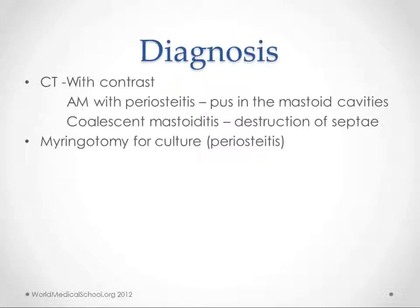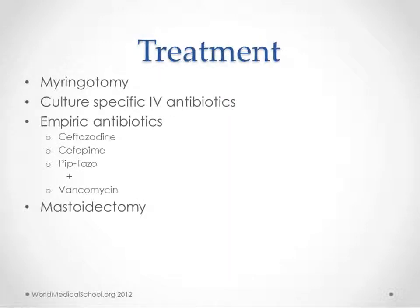In either case, you can do a myringotomy for culture, which will help identify what antibiotics to use. If we haven't obtained a specimen to determine bacterial sensitivity, then we use as broad a spectrum as we can — ceftazidime, cefepime, or piperacillin-tazobactam, which all cover Pseudomonas, since Pseudomonas is on our list of causative agents. Add vancomycin for methicillin-resistant staph. You also have mastoidectomy, which may be needed to drain the purulent fluid, determined by the severity of the case.